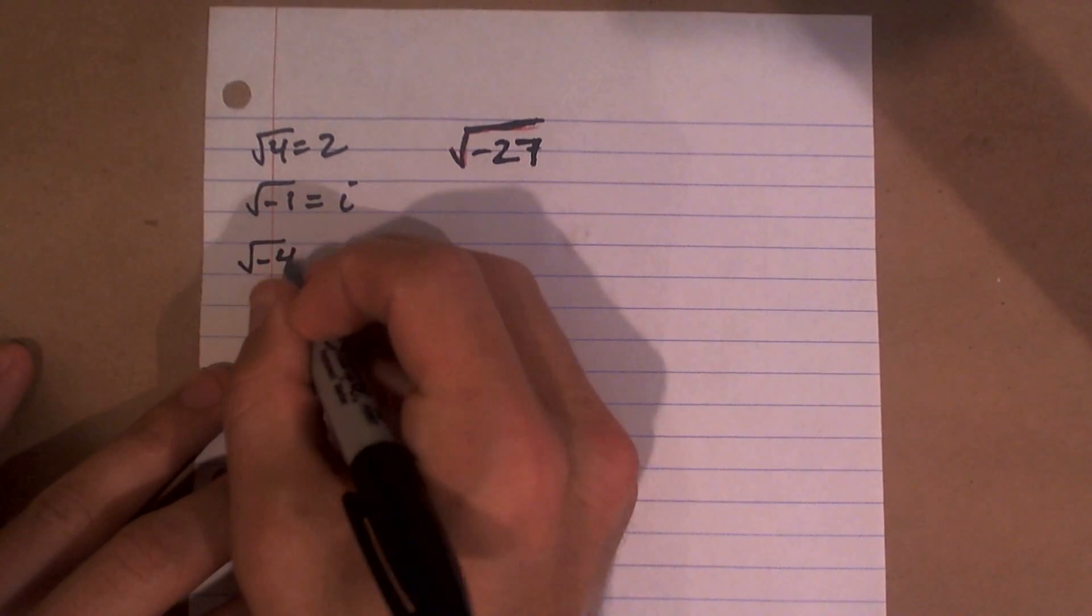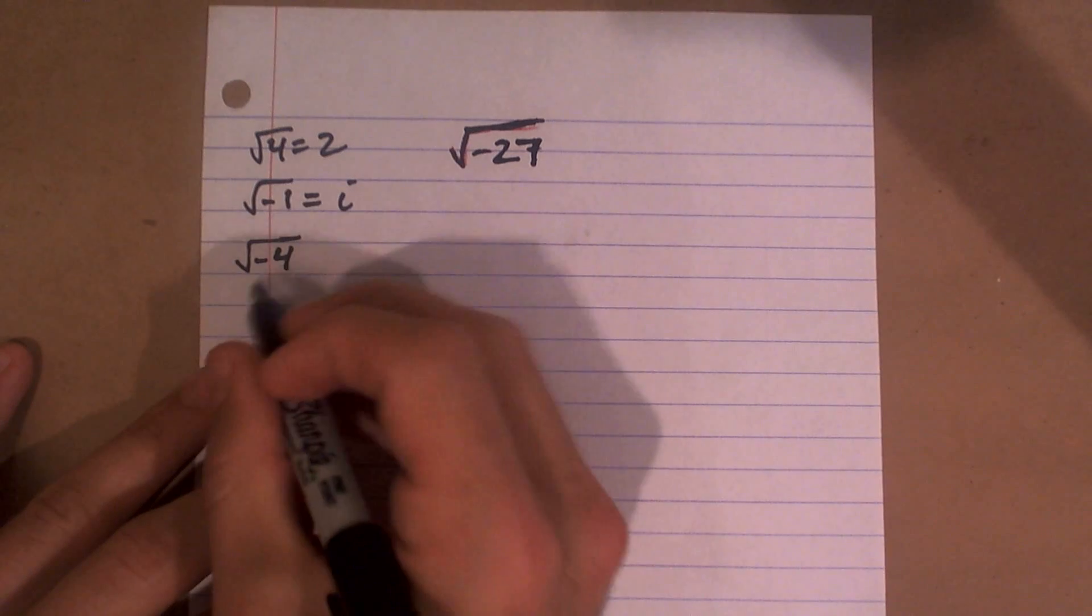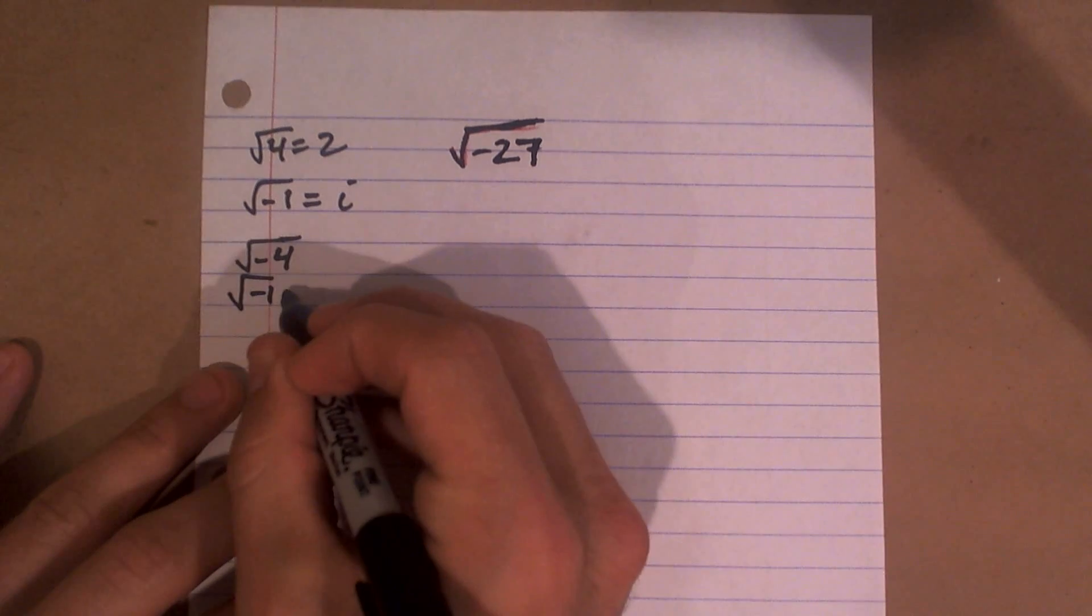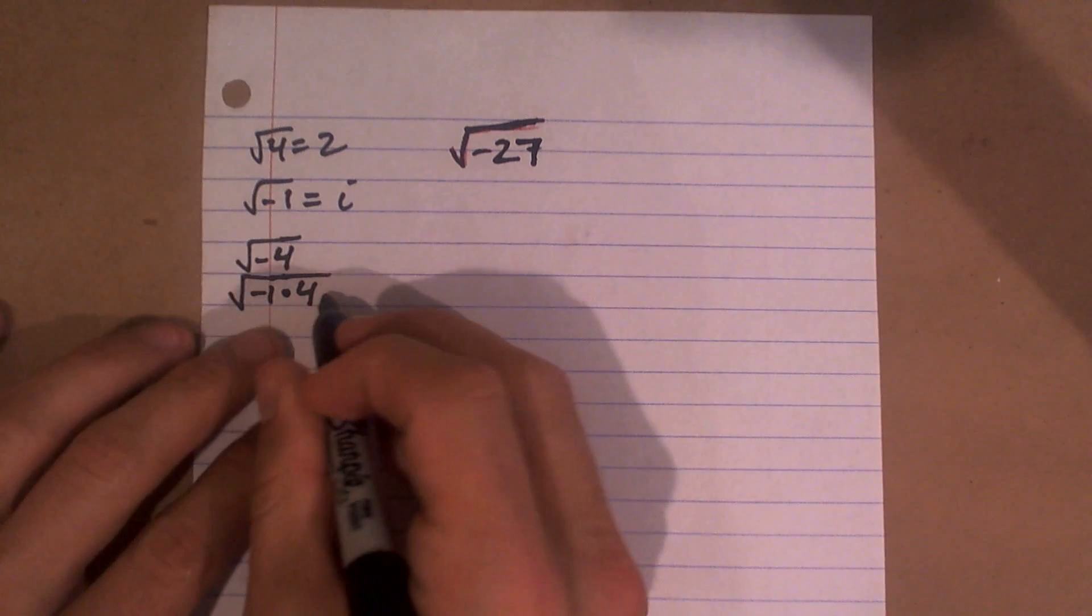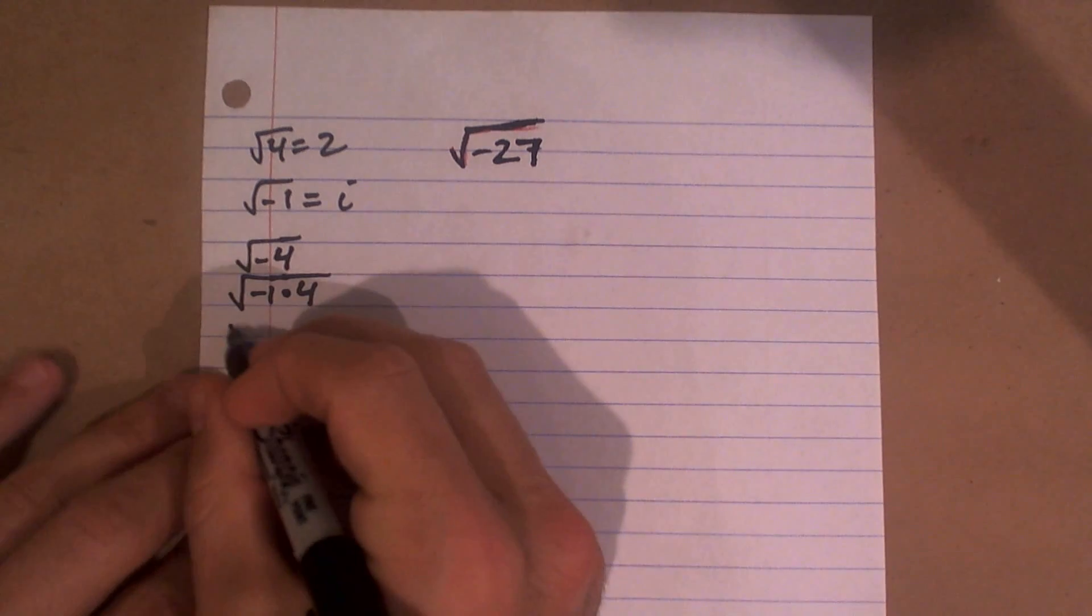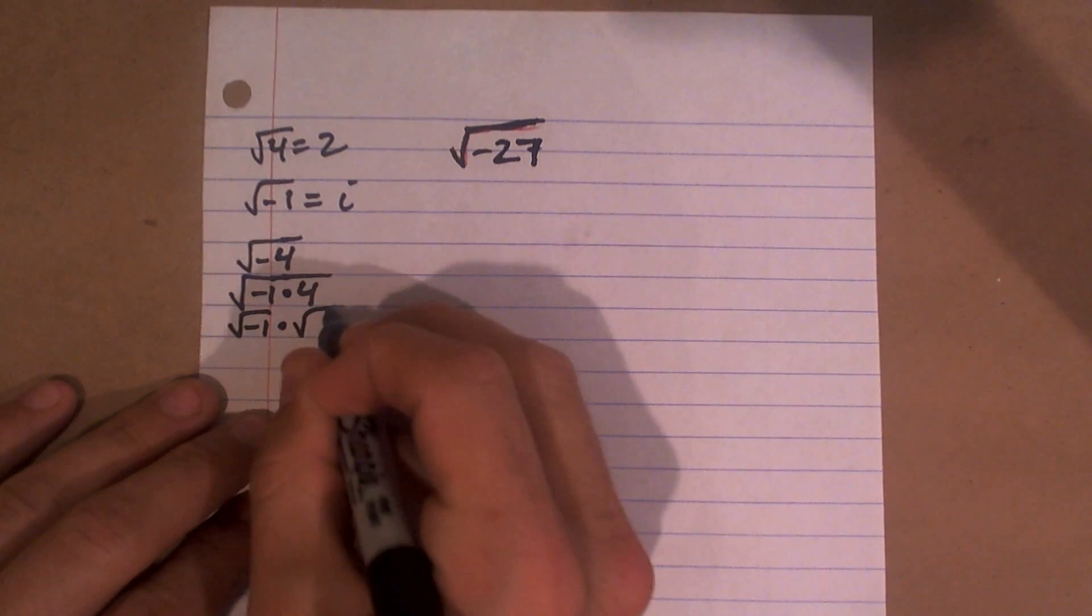So for instance, if I said what is the square root of negative 4, we could rewrite that as negative 1 times 4. And now I can break that up into the square root of negative 1 times the square root of 4.